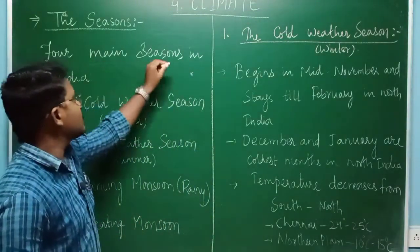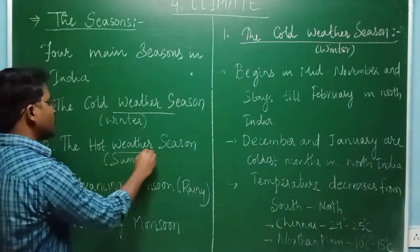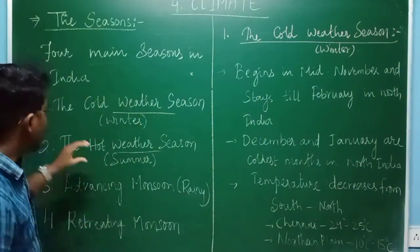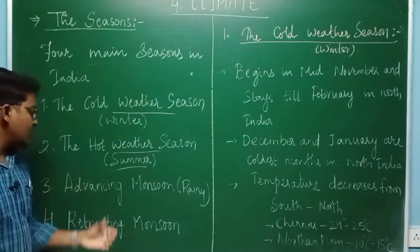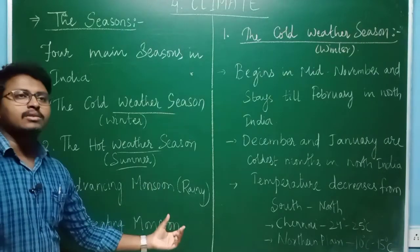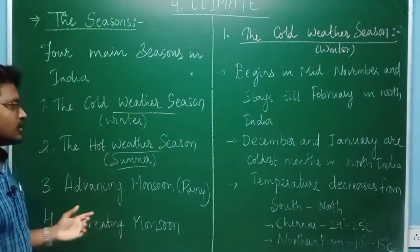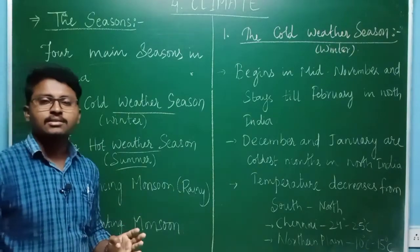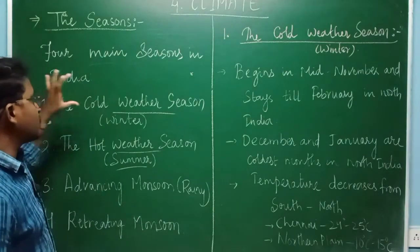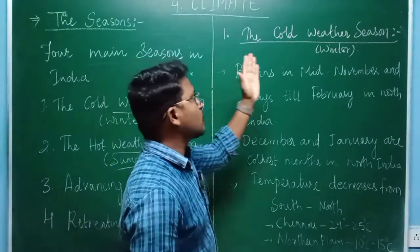There are mainly four main seasons in India: the cold weather season, also known as winter; the hot weather season, also known as summer; advancing monsoon, which is the rainy season; and retreating monsoon, that means when the monsoon winds reverse in the country. In this lecture, we will discuss in detail about the cold weather season as well as the hot weather season.